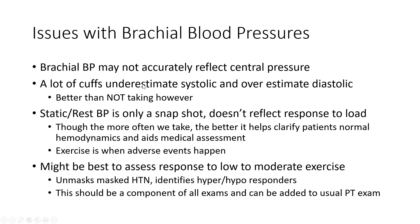So, issues of brachial blood pressure. Just to remember, brachial blood pressure may not actually reflect central blood pressure. We're extending a corollary from whatever we assess in the periphery, because we know generally arterial pressure in the arm is going to be pretty close to what we see at the aorta — a little bit higher, but roughly the same. So we're making an inference based on what we see in the periphery. A lot of cuffs may underestimate systolic or overestimate diastolic. However, no matter what, it's better than not taking it.